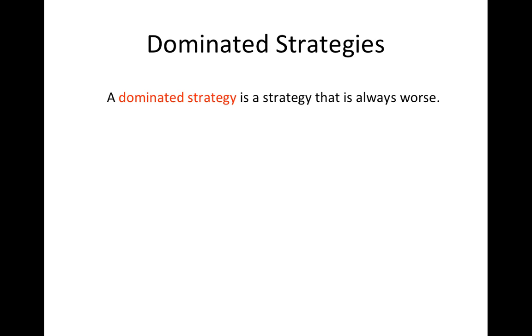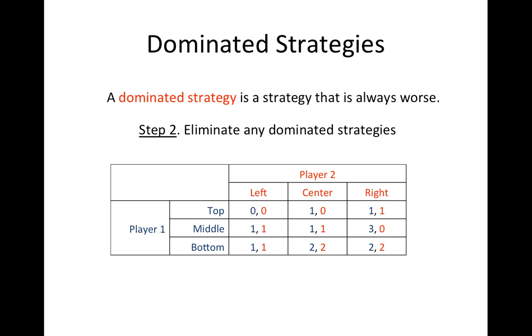Sometimes, even though a player does not have a strategy that is always better, they will have a strategy that is always worse. Such a strategy is known as a dominated strategy. Therefore, if you fail to find a dominant strategy equilibrium in a game, your second step should be to eliminate any dominated strategies and see if that leads you closer to a solution. Let's consider a more complicated game for this example. In this game, there are still only two players, but each player has three possible actions.